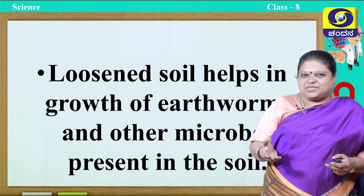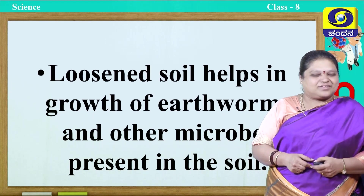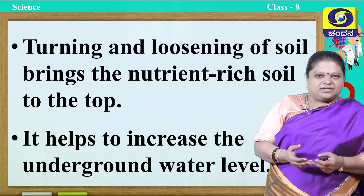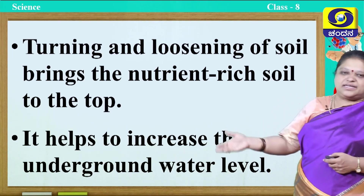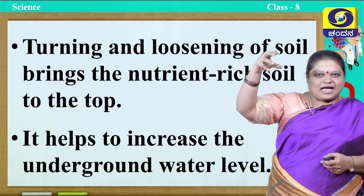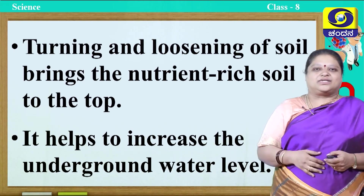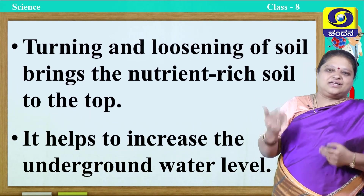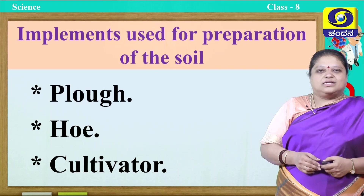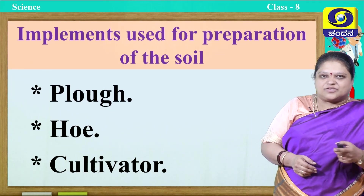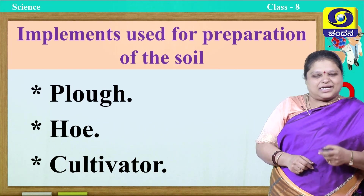You know that earthworm is the friend of the farmer — it will help in increasing the fertility of the soil. Next, turning and loosening of soil brings the nutrient-rich soil to the top. It also helps to increase the underground water level — because as the rain falls, the water will seep into the underground water and recharge the water level. Next, the implements used for preparation of the soil — we will use three implements: one is plow, hoe, and cultivator.